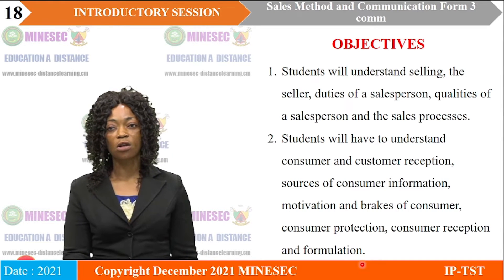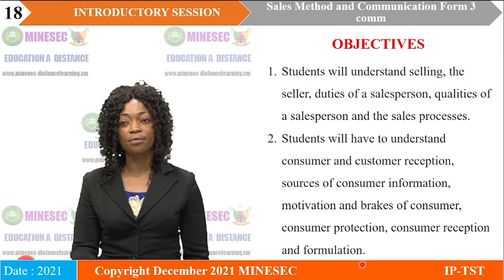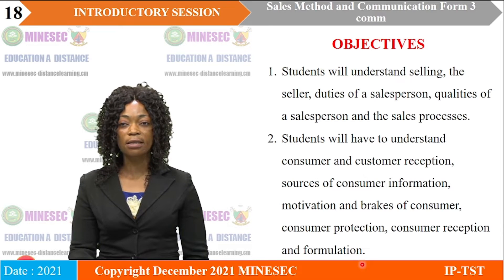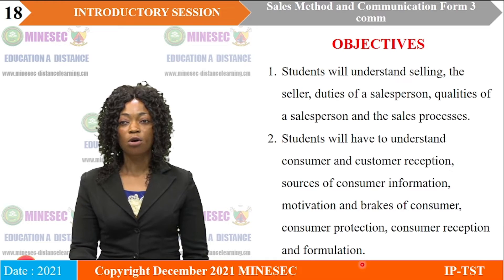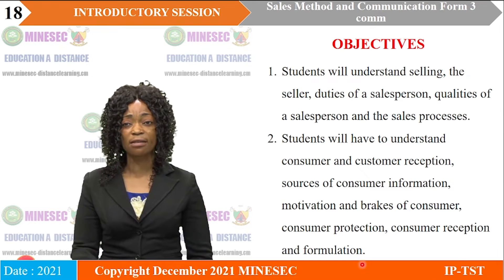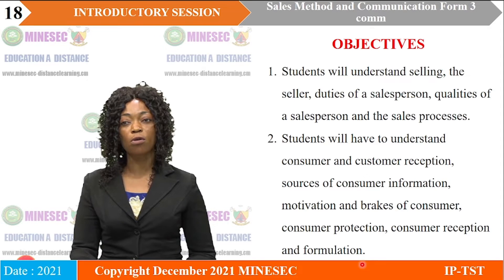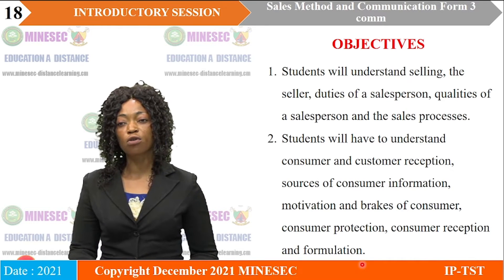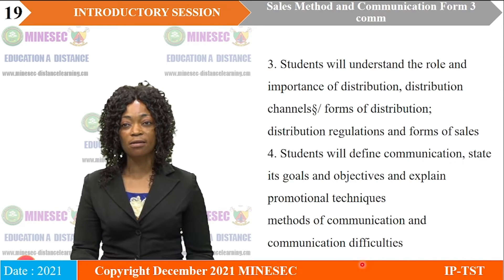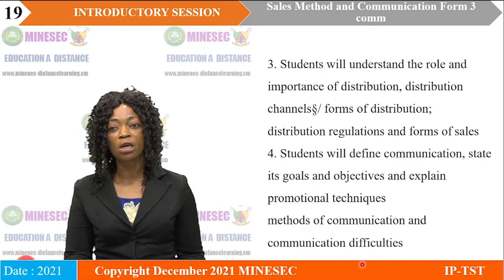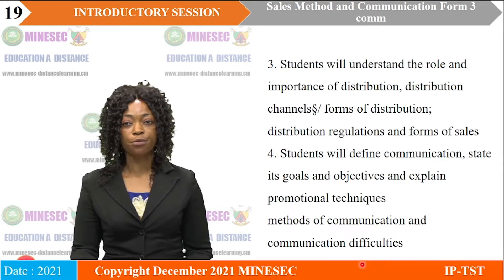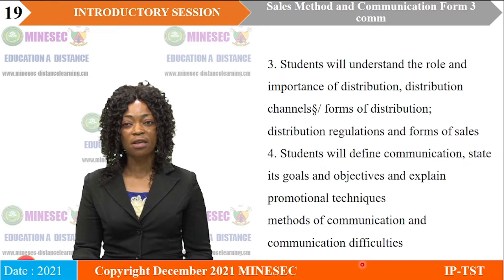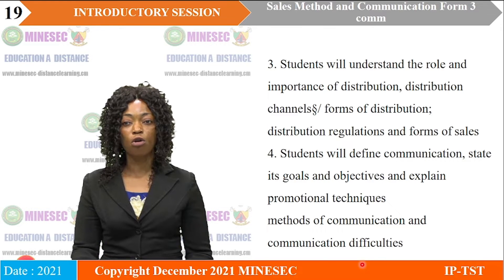The objectives of this lesson: students will understand selling, the seller, duties of the salesperson, qualities of a salesperson, and the sales process. In the second lesson, students will have an understanding of the consumer and customer reception, sources of consumer information, motivation and obstacles of the consumer, consumer protection, consumer reception, and reformulation. In the third lesson, students will understand the role and importance of distribution, distribution channels, forms of distribution, distribution regulations, and forms of sales. In the fourth lesson, students will define communication, state its goals and objectives, and explain promotional techniques, methods of communication, and communication difficulties.